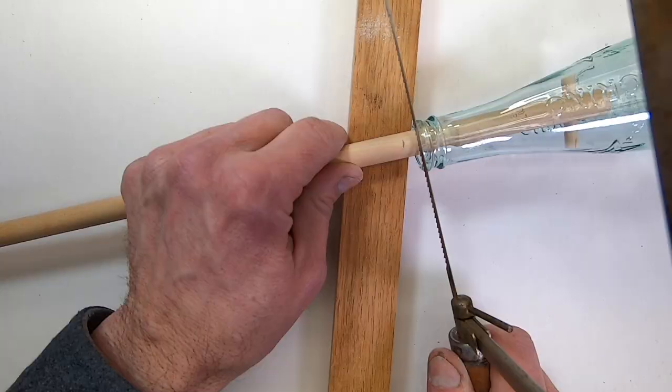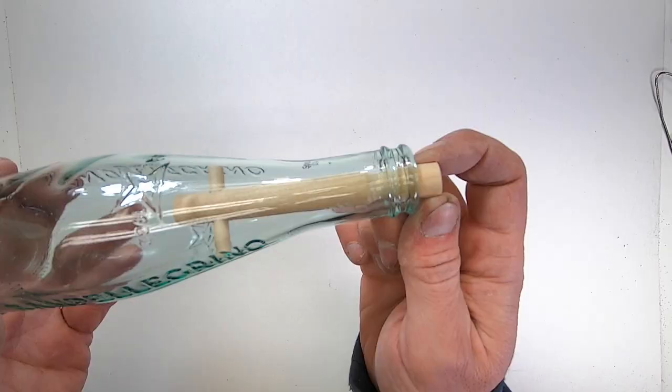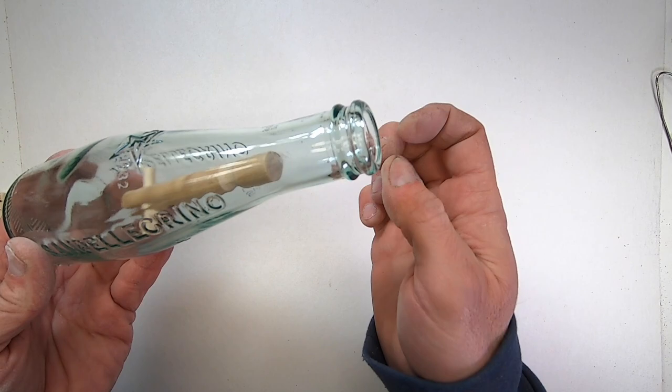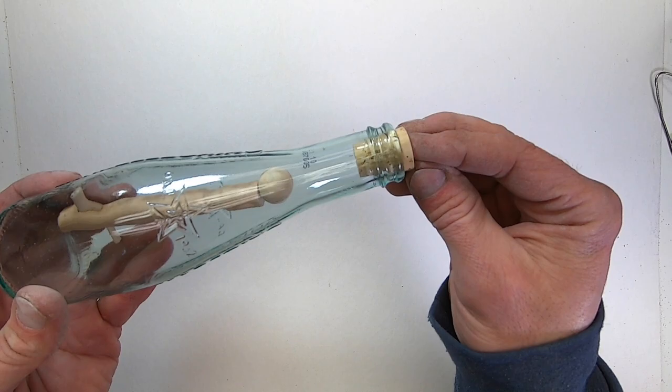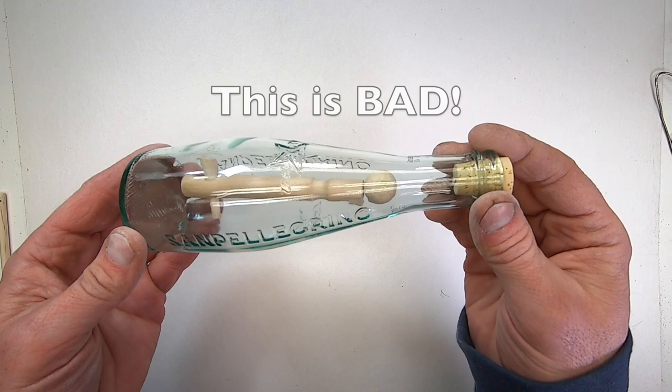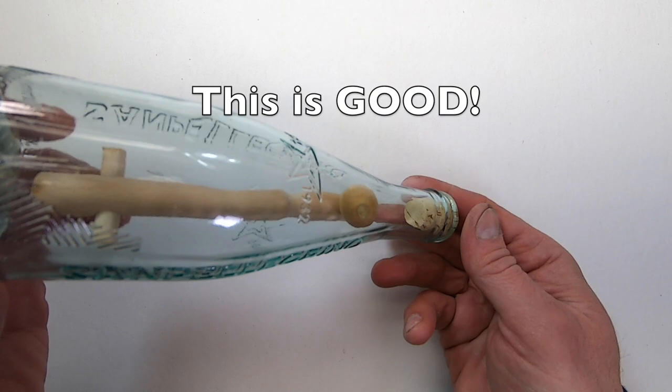Now I can cut the dowel rod to length. Be careful not to cut it too short or you're going to ruin the whole thing. I can't really give you the exact length because it depends on the bottle you're using. The perfect length is where the ball will barely fit into the neck of the bottle on the end of the wood dowel rod. This might take you a few adjustment attempts to get it right. But once you do, it should work perfectly.